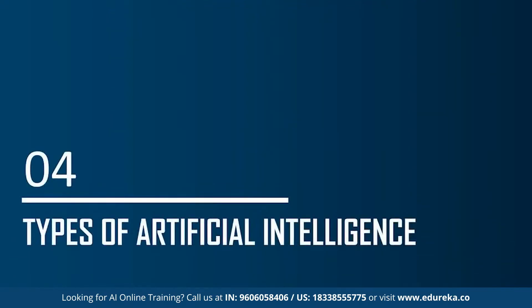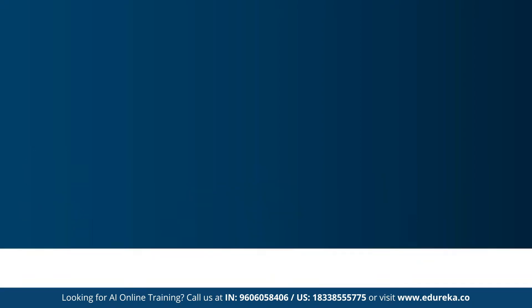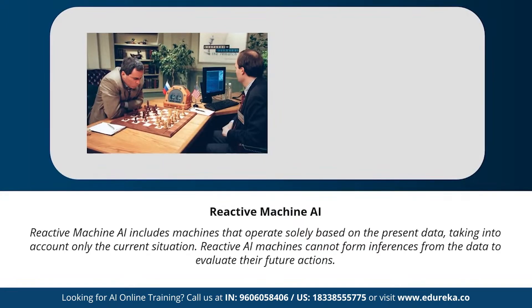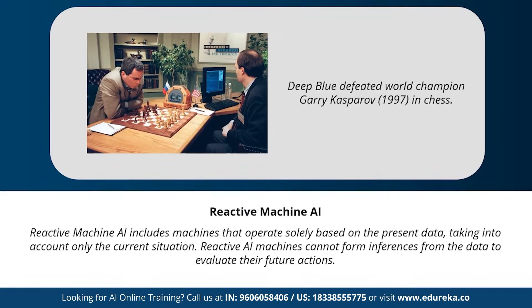Moving on to the different types of artificial intelligence: based on the functionality of AI-based systems, AI can be categorized into four types. The first type is reactive machines AI. This type includes machines that operate solely based on present data and take into consideration only the current situation. Reactive AI machines cannot form inferences from data to evaluate future actions — they perform a narrowed range of predefined tasks. An example is IBM's chess program that beat world champion Garry Kasparov.